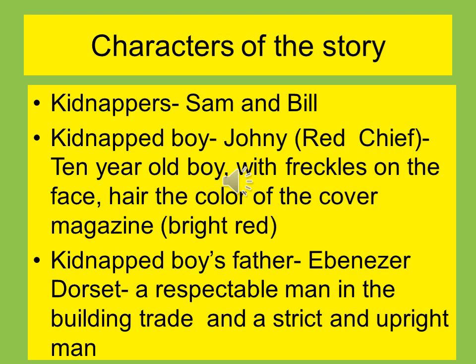Let's have a look at the characters of the story. The kidnappers are named Sam and Bill. Sam is the narrator in the lesson. The kidnapped boy, Johnny, calls himself Red Chief. He is a ten-year-old boy with spectacles on his face and hair the color of bright, burning red. The kidnapped boy's father is Ebenezer Dorset, a respectable man — strict and upright. The kidnappers considered Red Chief to be the right choice as their victim because he was the only son of Dorset.